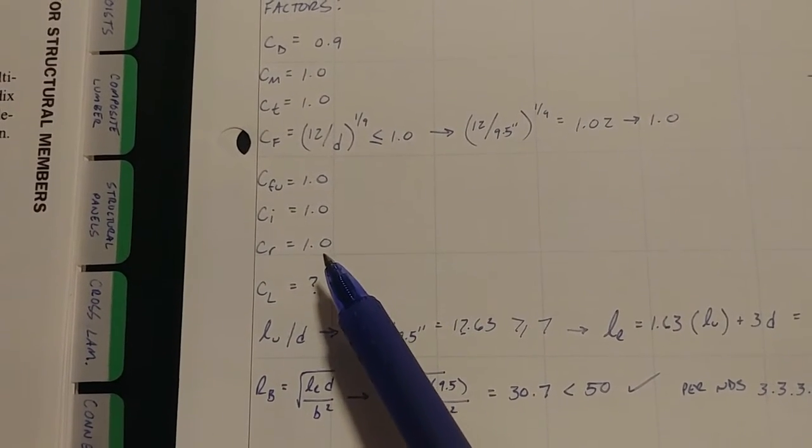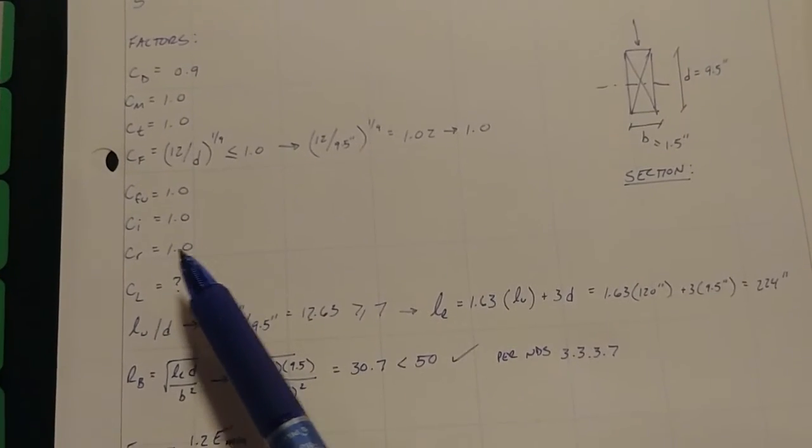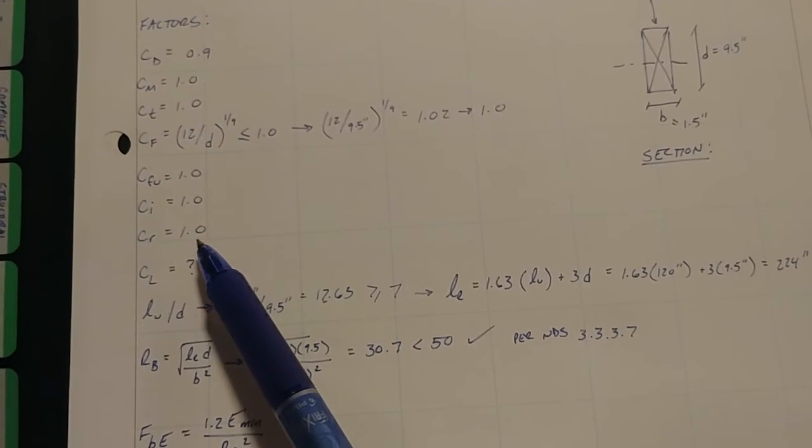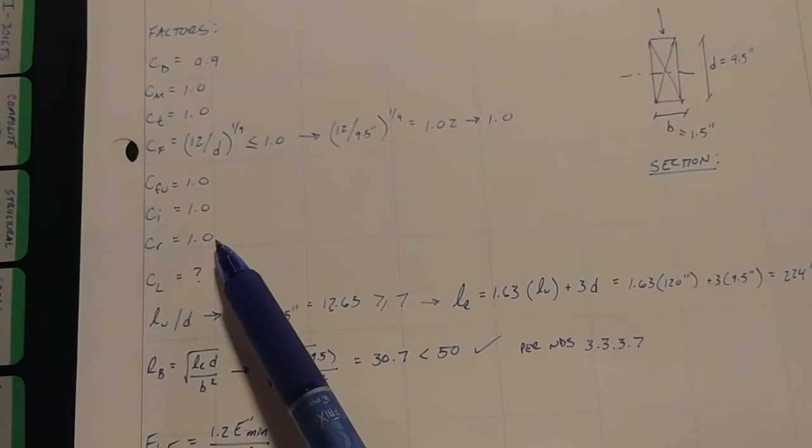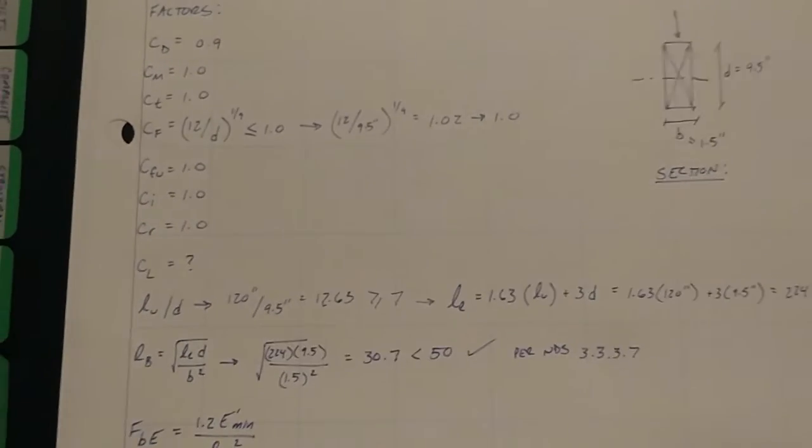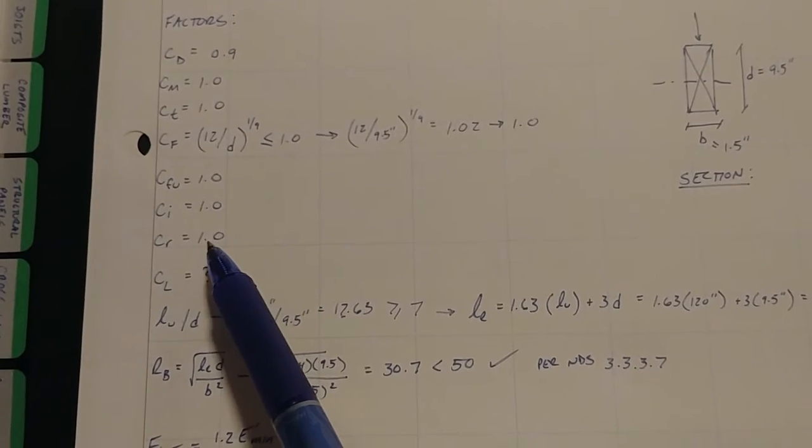And then CR is a repetitive factor. So that's if you had like a whole roofing system and you had two by tens at two feet on center to make up that roof, that would get you your repetitive factor to actually be greater than one. So it would give you additional strength in your beam. But in this case, we just have one beam. So we're just going to assume 1.0.